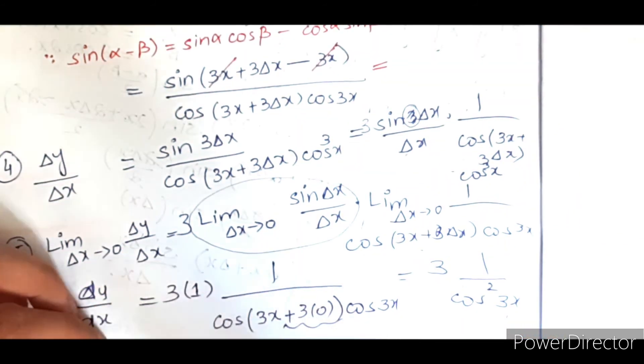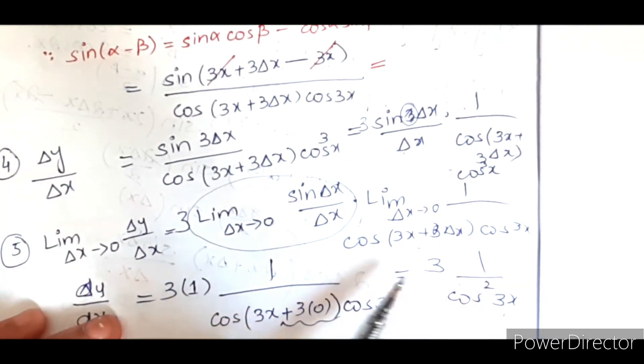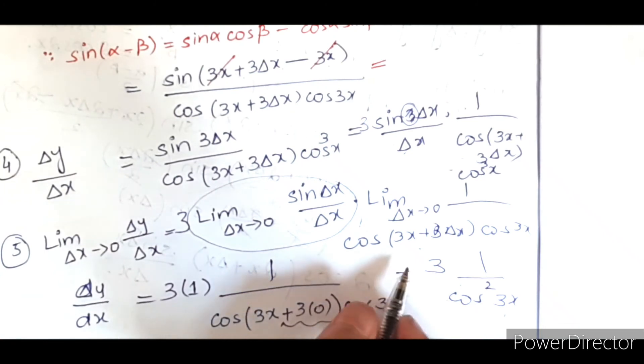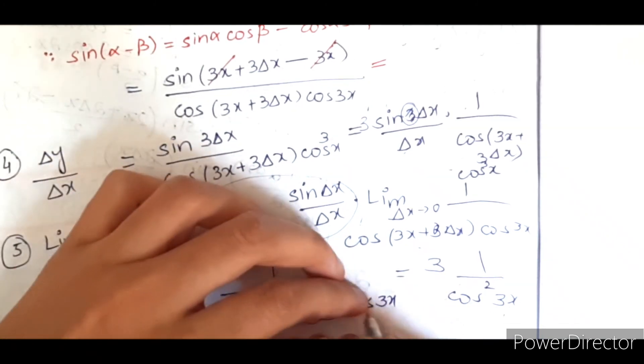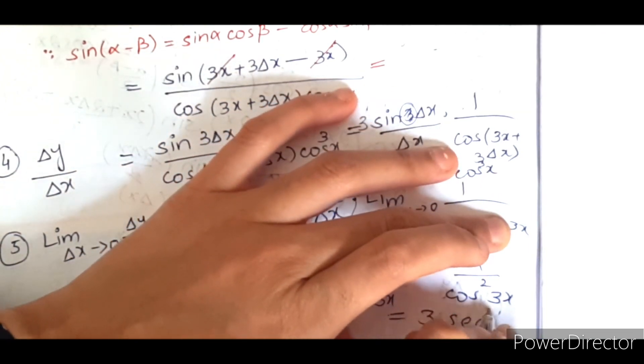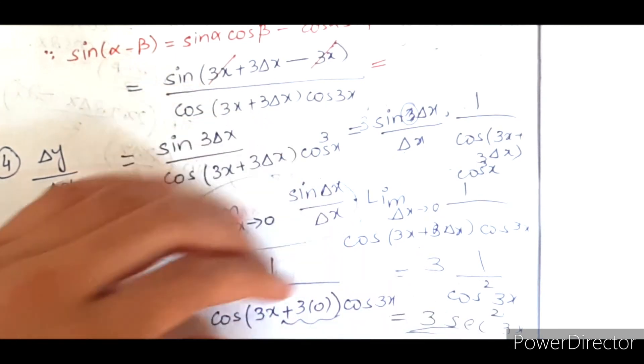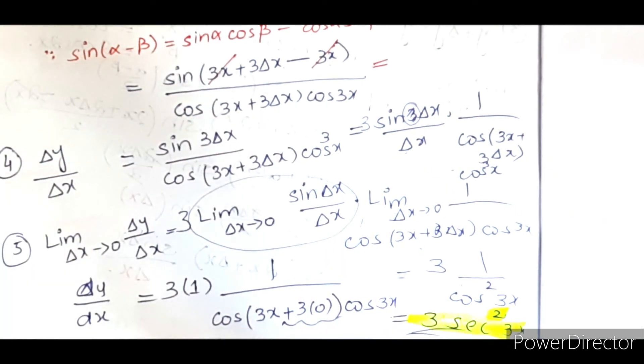So the answer will be: 1 over cos square is the reciprocal of secant square. So it is equal to 3 secant square 3x. And this is the answer for this part. I hope you understand well. Thanks for watching. Allah Hafiz.